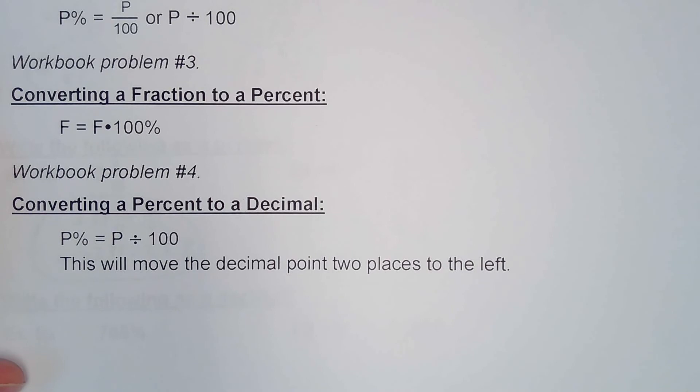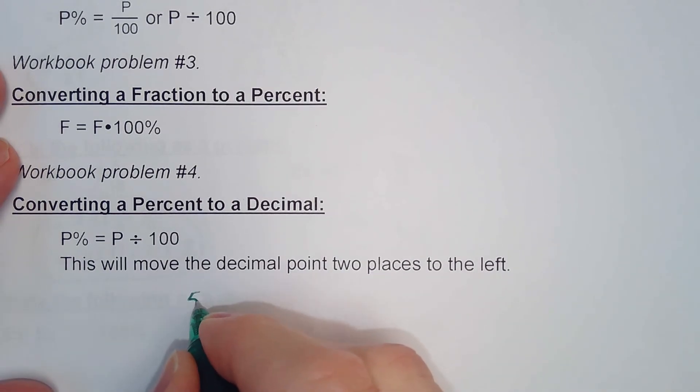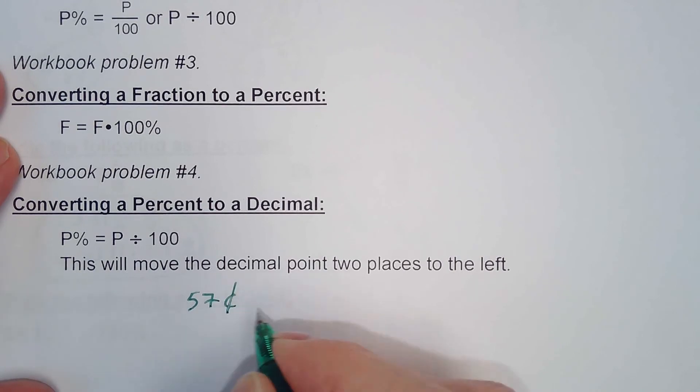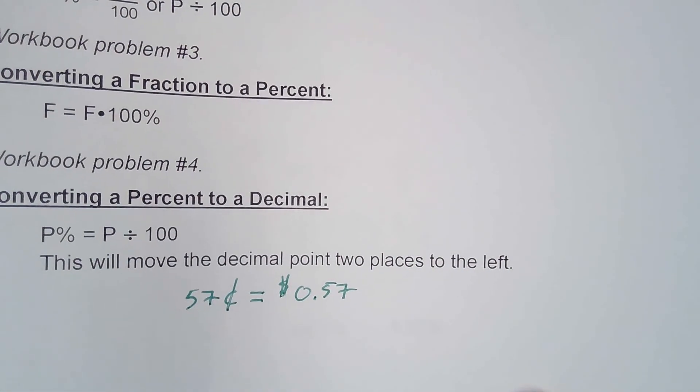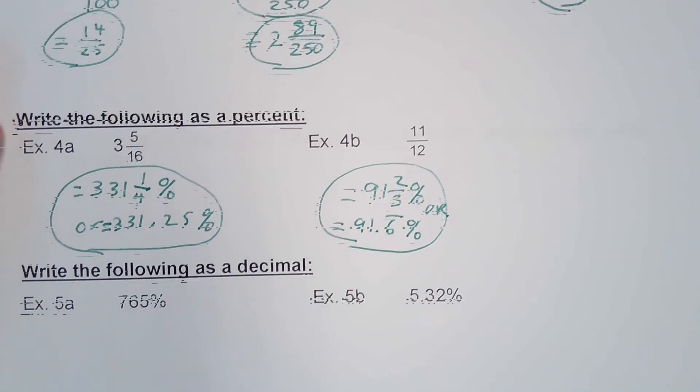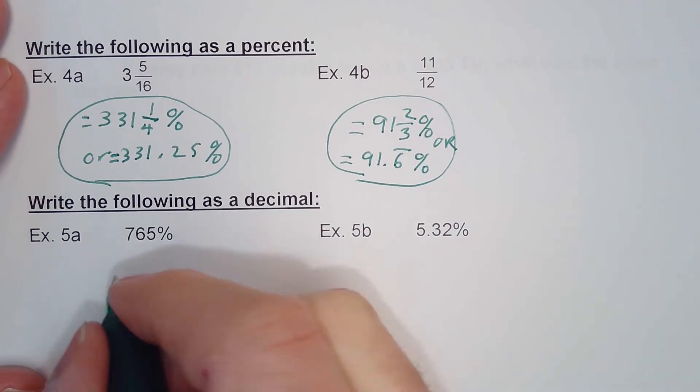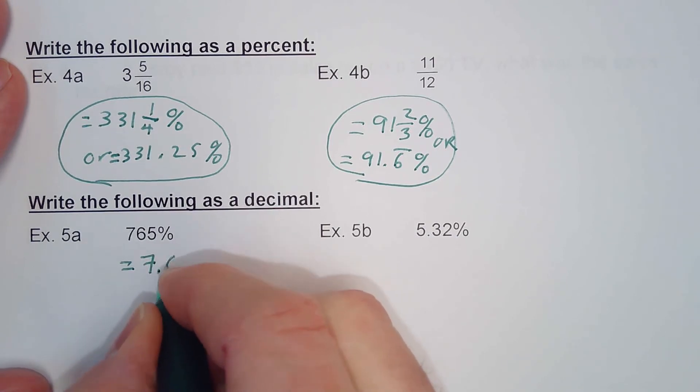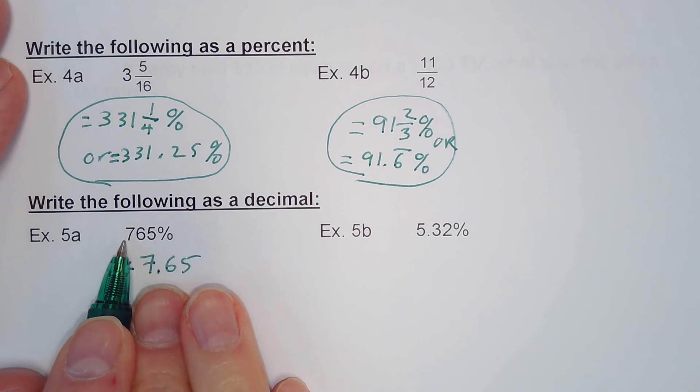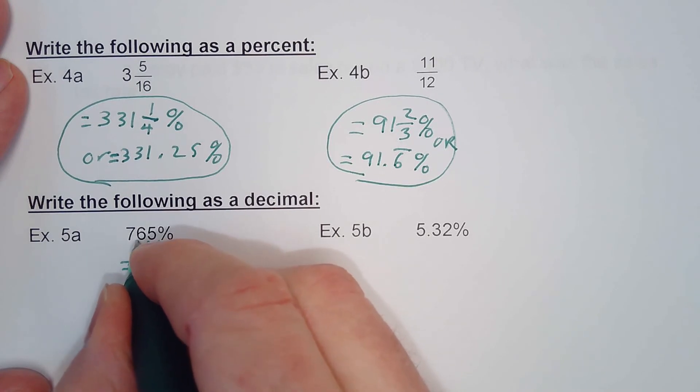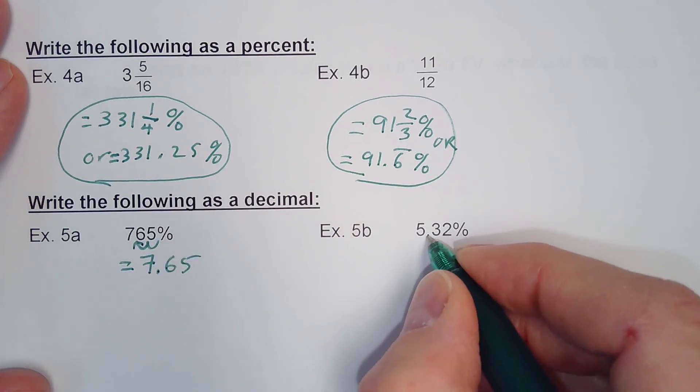Now to convert percent to a decimal, you divide the percent by 100. What I like to do is think about money. If I have 57 cents, I'm going to move the decimal point over two places and rewrite that as $0.57. So if I have 765 cents, that'd be $7.65. So 765% is 7.65. I'm just moving my decimal point over two places to the left. Here I'm going to do the same thing.